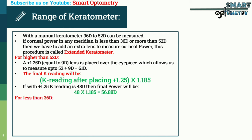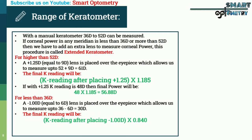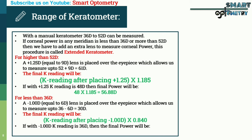For less than 36 diopters, a -1 diopter lens (equal to 6 diopters) is placed over the eyepiece, allowing measurement down to 36 - 6 = 30 diopters. The final keratometry reading = reading after placing -1D lens × 0.840. For example, if with -1D the reading is 36 diopters, the final power = 36 × 0.84 = 30.24 diopters.